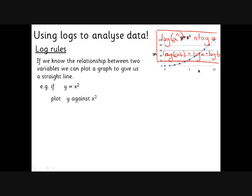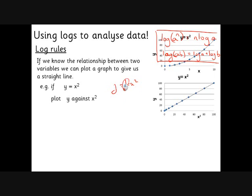If we plot y against x squared then we end up with a straight line graph. We can find the gradient if there's a constant of proportionality between those two things. So if this is y equals k x squared, then we can find k because k will be the gradient of the graph.